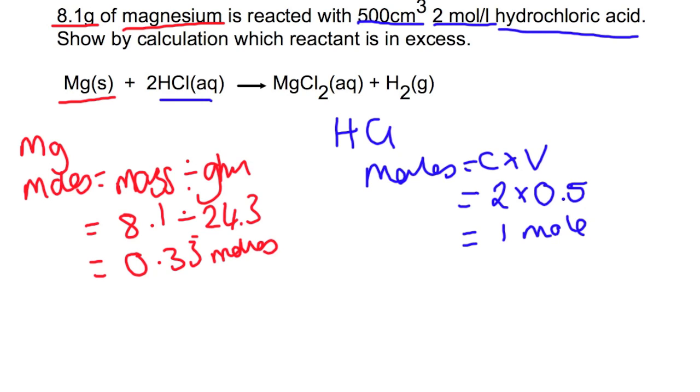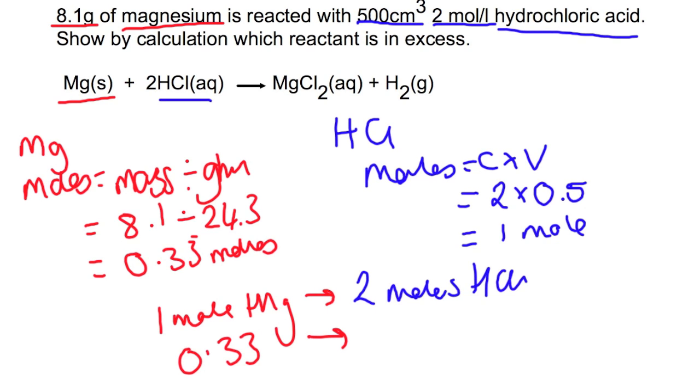The next step is to look at the mole ratio. So for every mole of Mg that gets used, we need 2 moles of HCl. You can see this from the balanced equation and you're looking at the coefficients in front of the reactants. We are using 0.33 moles of Mg, which means that to fully react all of that we would need 0.66 of HCl.